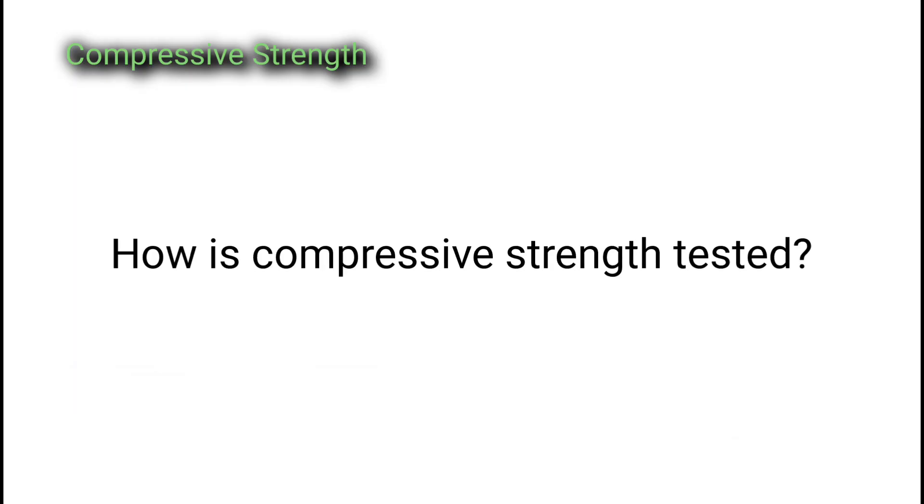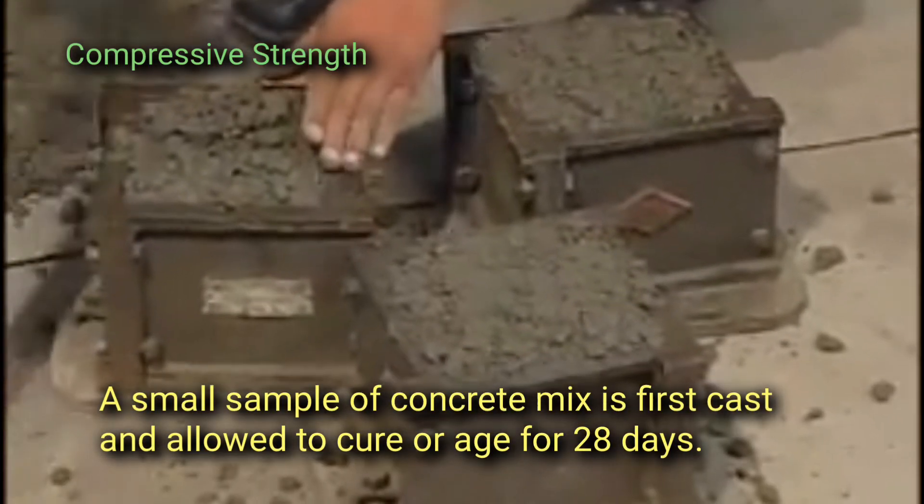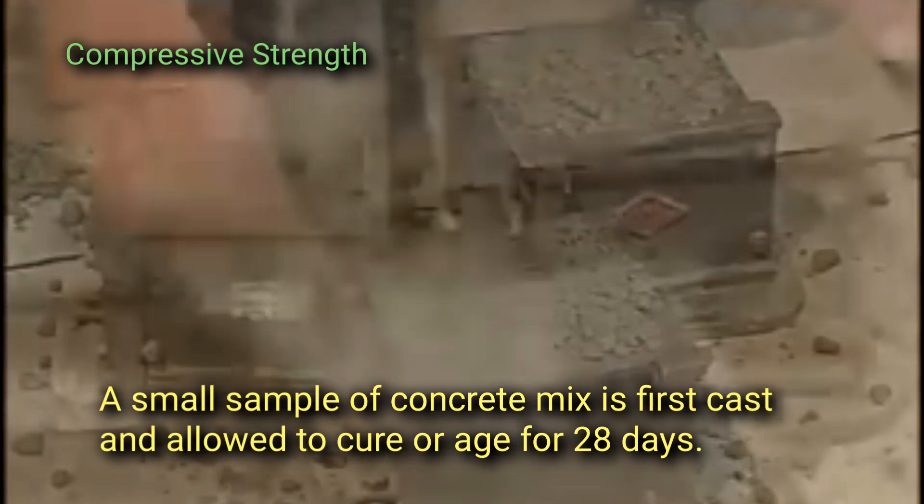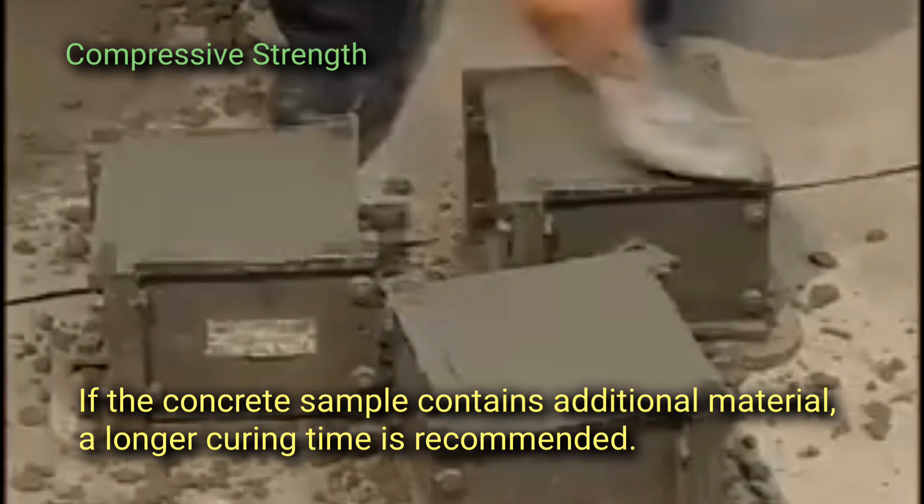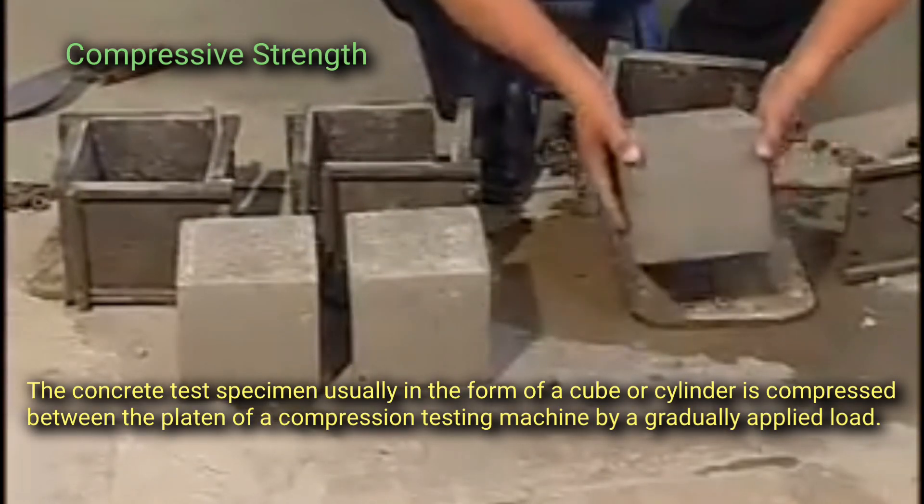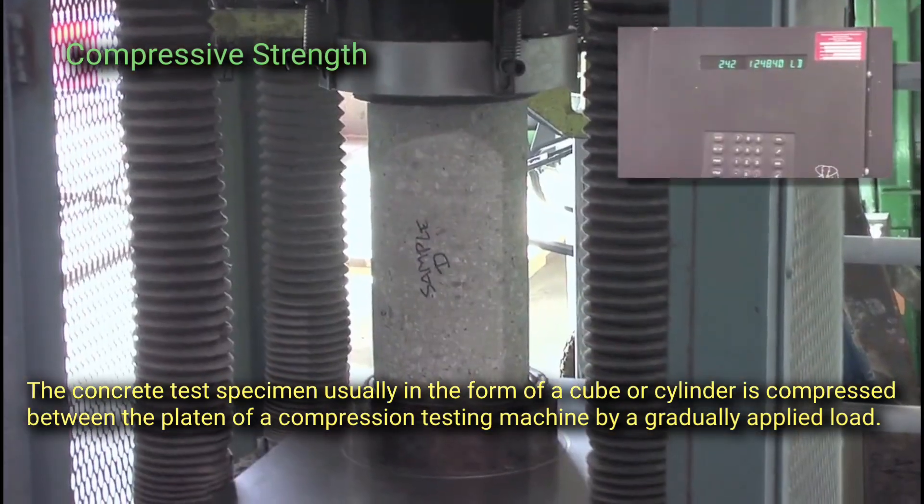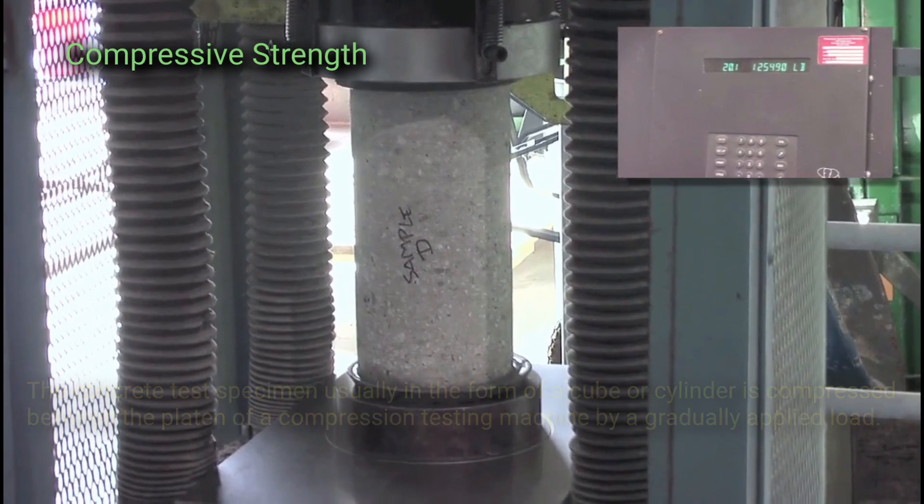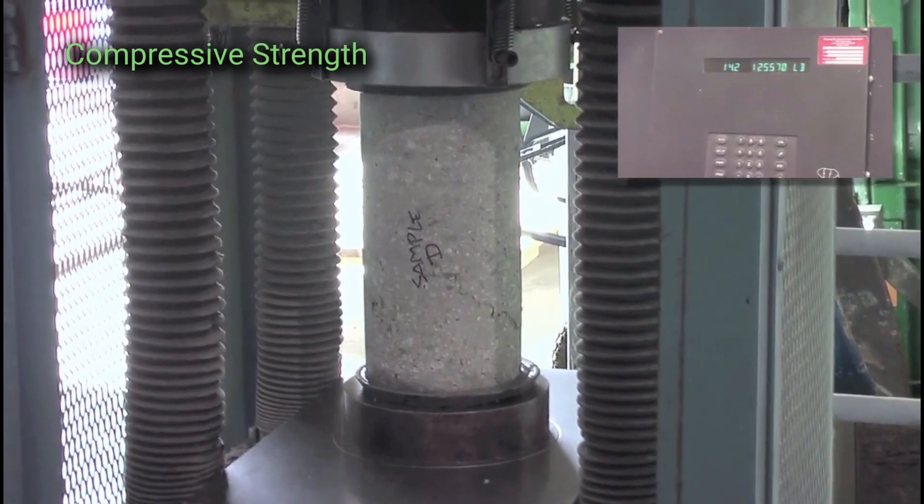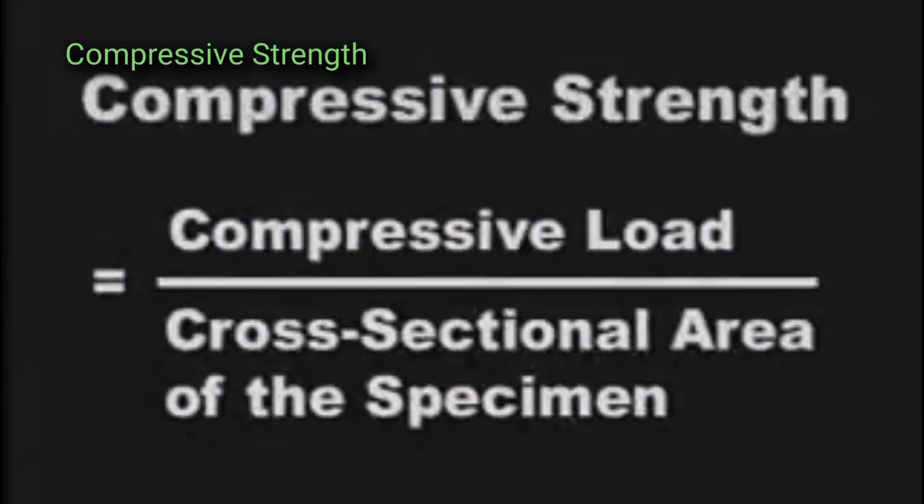How is compressive strength tested? A small sample of concrete mix is first cast and allowed to cure or age for 28 days. If the concrete sample contains additional material, a longer curing time is recommended. The concrete test specimen, usually in the form of a cube or cylinder, is compressed between the platen of a compression testing machine by a gradually applied load. The result of the compressive strength is calculated by the force applied to the specimen divided by its cross-sectional area.